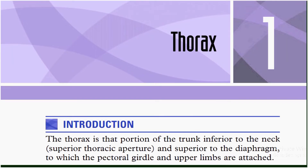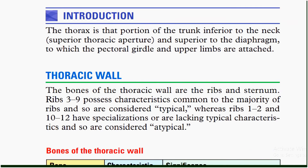Welcome to Science Era. In this video, I'm going to be discussing the thorax, which is chapter number one from clinical anatomy. Let's begin. The thorax is that portion of the trunk inferior to the neck and superior to the diaphragm, to which the pectoral girdle and upper limbs are attached.